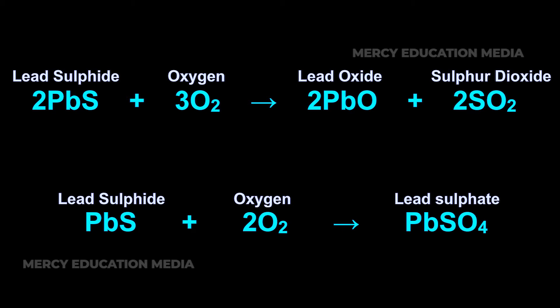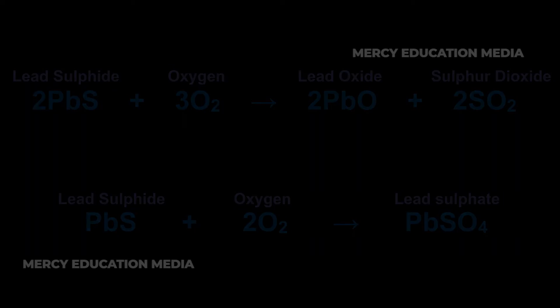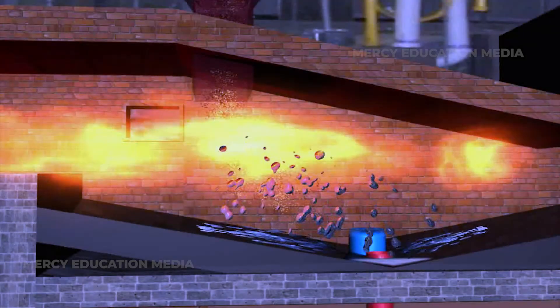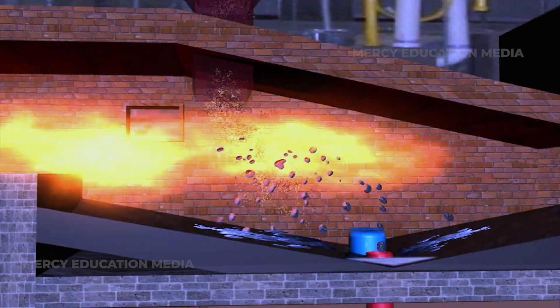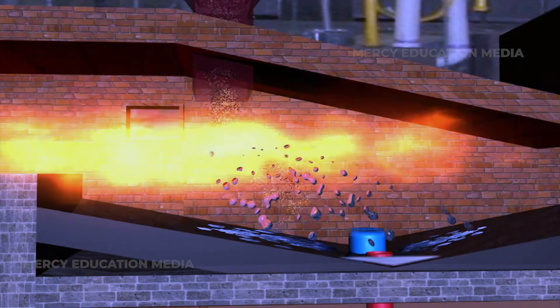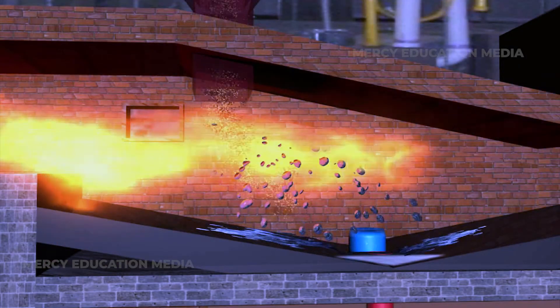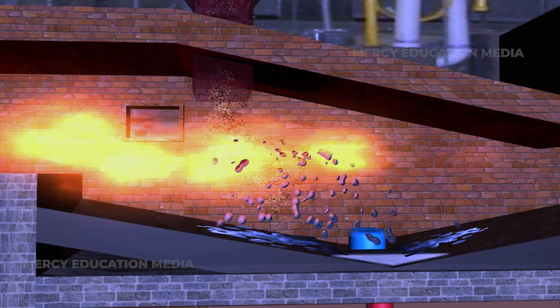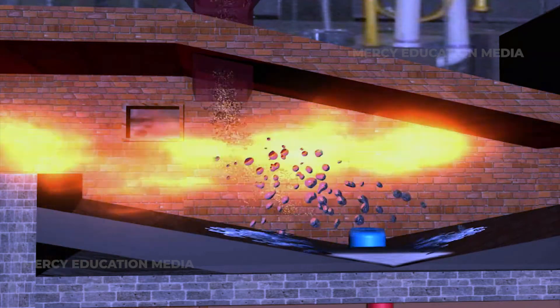PbS + O₂ gives PbSO₄. More of galena is then added, the temperature is raised, and simultaneously the air supply is reduced.